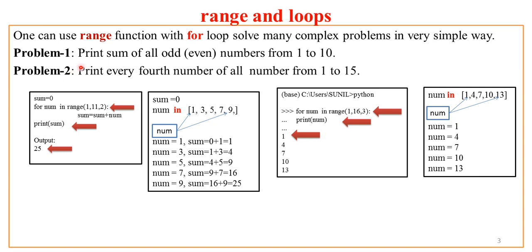Here I have two problems. First: print the sum of all odd or even numbers from 1 to 10. Whatever logic I apply for odd numbers, a small change will give the solution for even numbers. The second problem is: print every fourth number from 1 to 15 — for example, starting at 1, jump to 4, then 7, and so on. Now let us see the logic behind this.